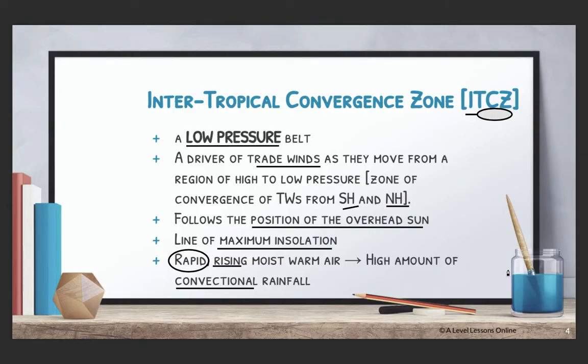Your ITCZ is basically a zone where there is extremely low pressure. When there is low pressure, it means that there is high temperature — temperature and pressure always work in the opposite direction. If there is low pressure, there is high temperature. If there is high pressure, there is low temperature. This is an extremely important concept to understand before you move on in terms of your entire Hadley cell.